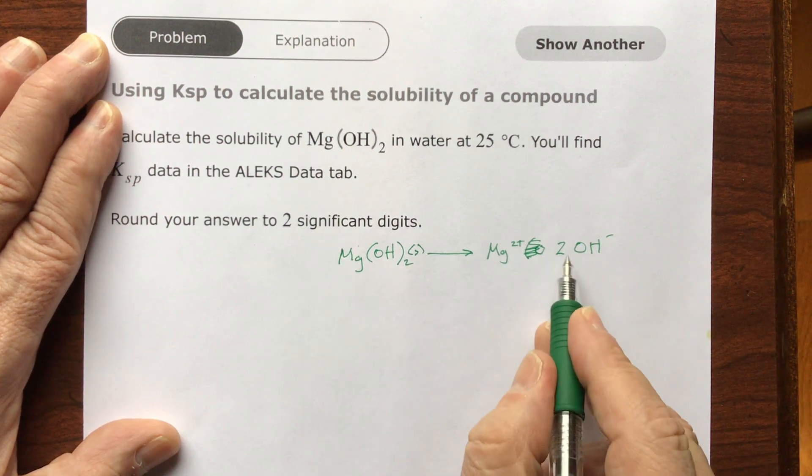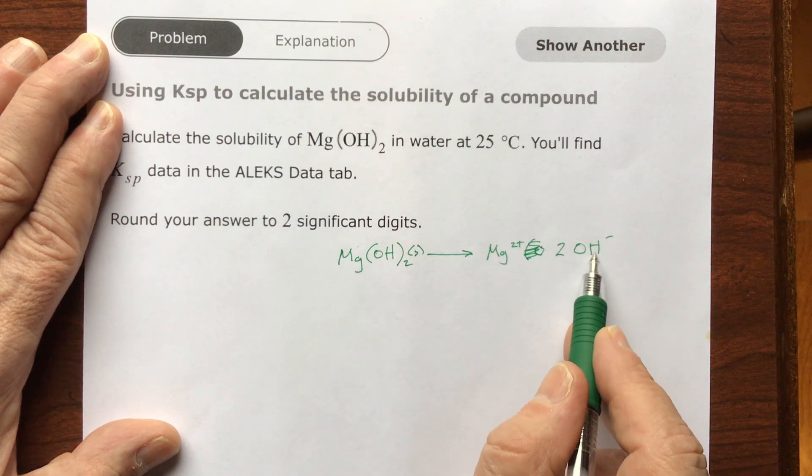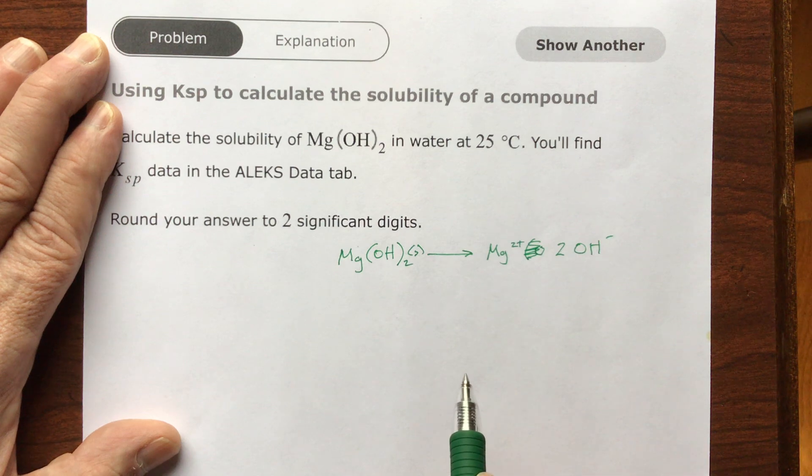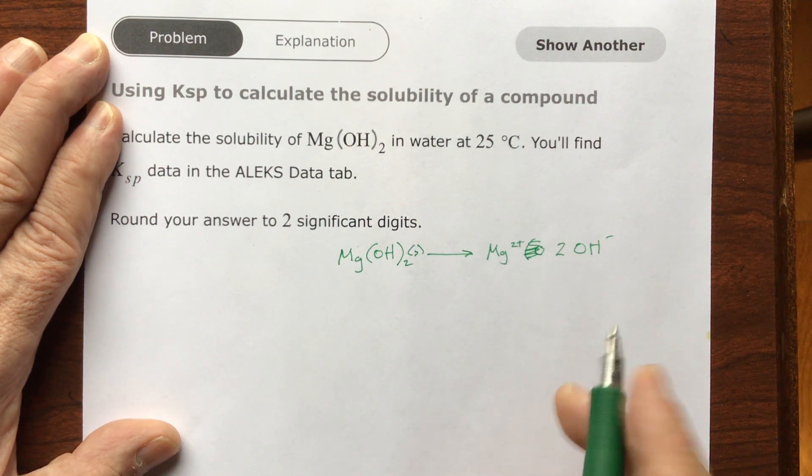Now this 2 as a coefficient, you see, because there's two here joining with one of these, each one of these negative 1s, it takes two negative 1s to balance with a positive 2. This balanced equation, this coefficient, is going to play into the solubility product.